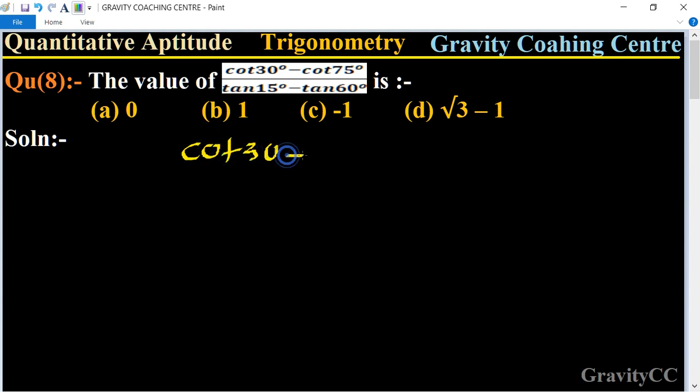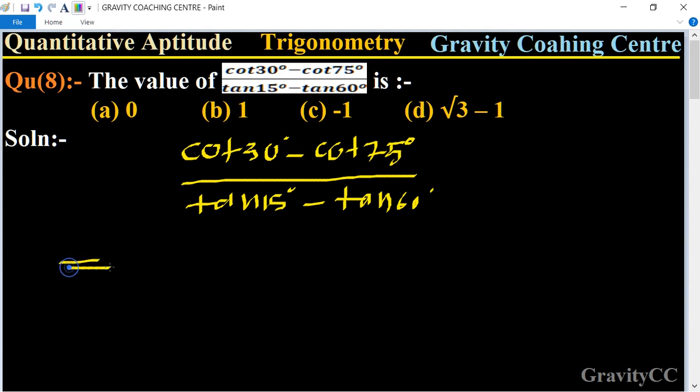Minus cot 75 degree upon tan 15 degree minus tan 60 degree. And now we change cot 30 is equal to, we can write them 90 minus 60 degree.